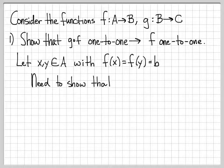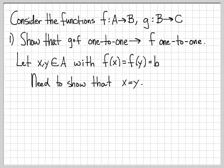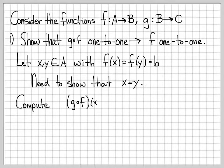What I need to show is that x equals y, because that's the definition of a 1-to-1 function: for all x, y in A, f(x) = f(y) implies x = y. So since I'm trying to establish that f is 1-to-1, what I'm really trying to show is that x equals y. We're told that g composed of f is 1-to-1, and we're going to use that to get to the conclusion we want.